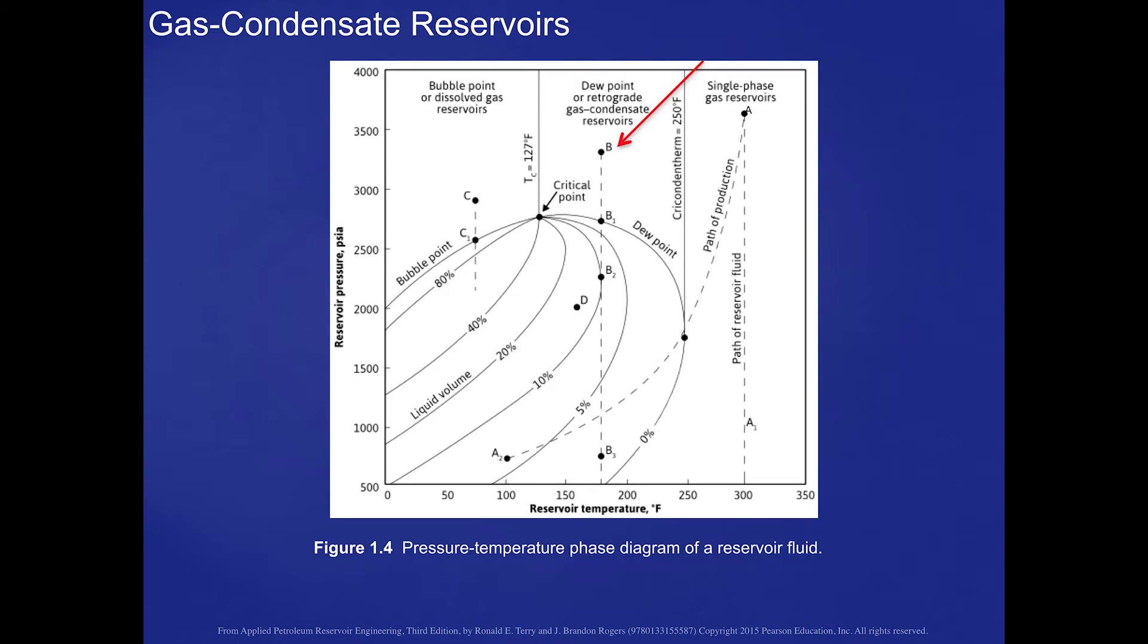the pressure will drop and the temperature will drop, and we will produce a condensate on the surface and enhance the value then of that hydrocarbon. So we don't want that liquid to condense in the reservoir itself. Now if you notice,